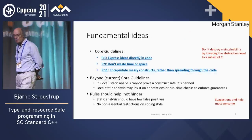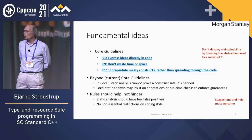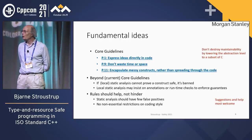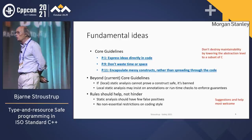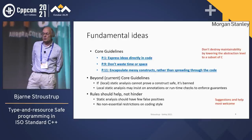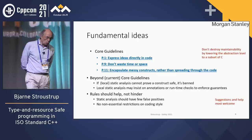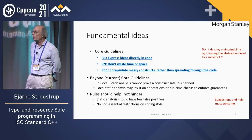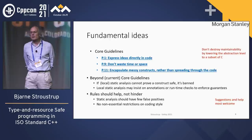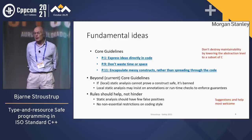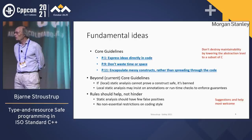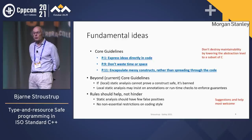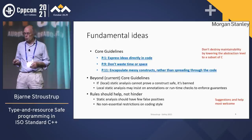Fundamental ideas here: express the ideas directly in code. If we tell the compiler what we are trying to do, it has a chance of checking it, a chance to optimize it, and people who read the code have a chance to understand it. Don't waste time and space — this is C++ after all. The world is messy, so there will be messy code somewhere, encapsulated rather than spreading through interfaces, which would allow all kinds of problems to slip through. The core guidelines has 11 or 12 philosophical principles that cannot be checked by compilers, but they are quite useful to look at.